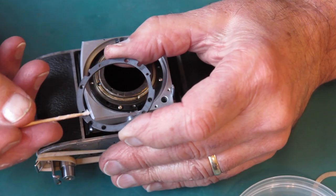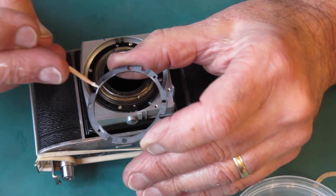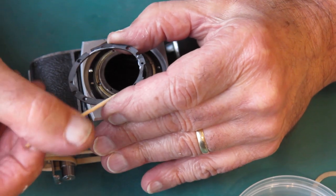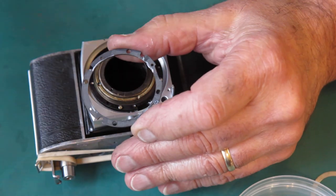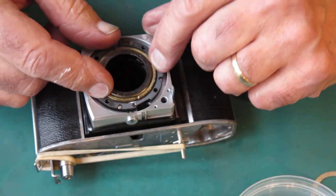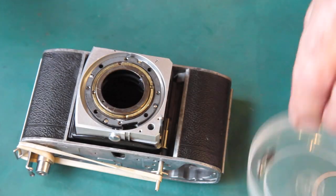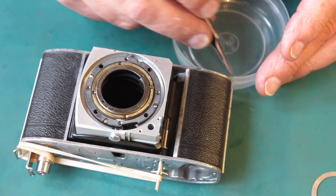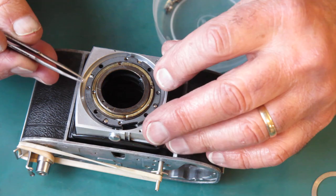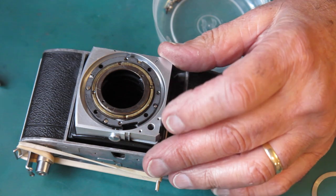You don't need much lubricant here because there's not much force going on. So far so good. There's four small countersunk head screws that hold the retaining plate in place.